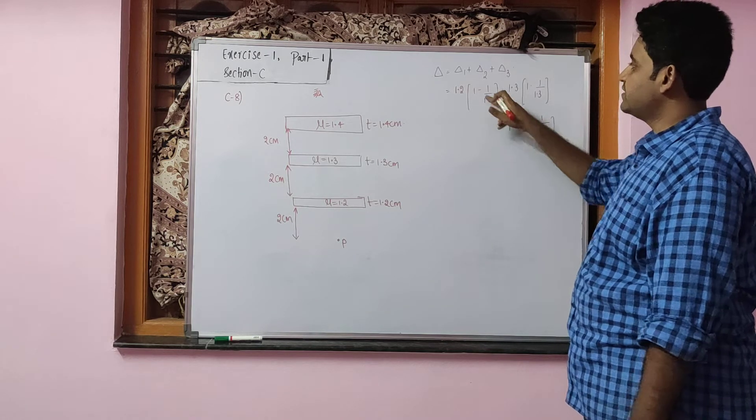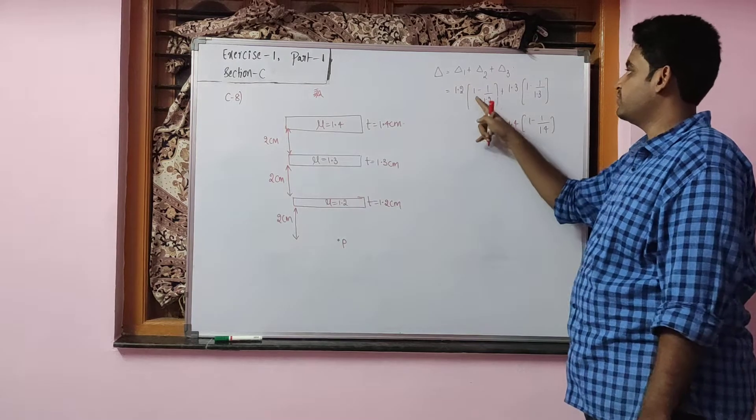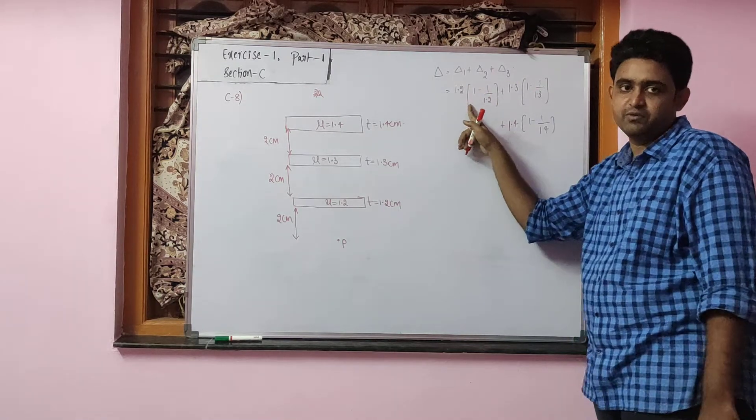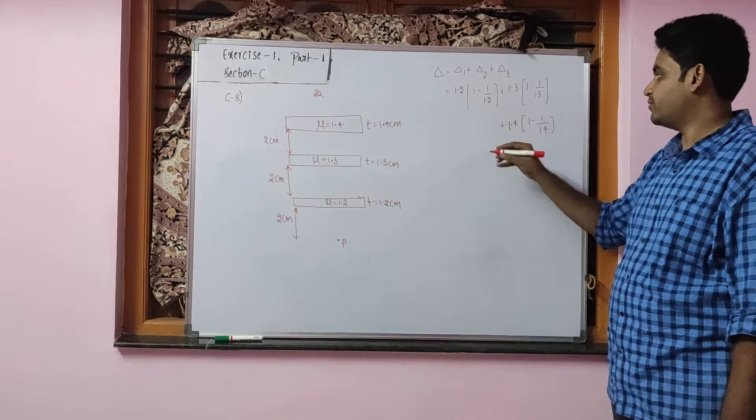Taking the LCM, the denominator 1.2 will get cancelled out. 1.2 minus 1 will be 0.2. Similarly, this will be 0.3 and this will be 0.4.